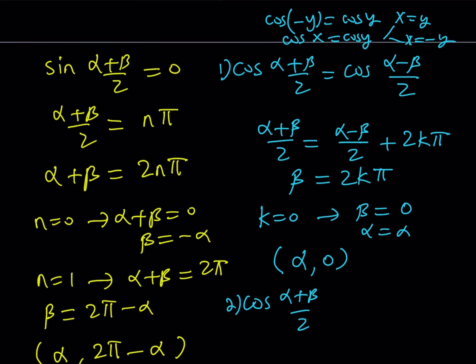I can also say that alpha plus beta over 2 is equal to the opposite of alpha minus beta over 2, which is beta minus alpha over 2 plus 2k pi. But notice that from here, beta over 2 is going to cancel out.